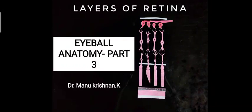Hi everyone, this is Dr. Manu Krishnan K. Today is our continuous class on eyeball anatomy part 3, where we will be discussing the nervous coat of the eyeball, that is nothing but the retina.